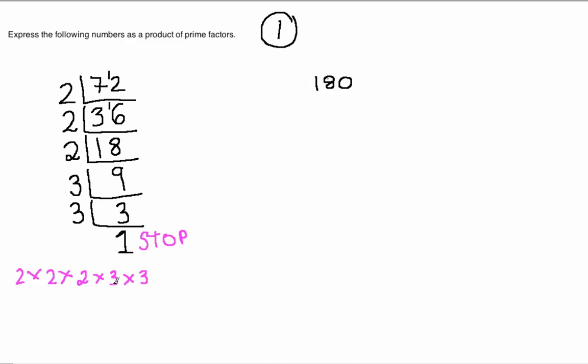You could leave your answer in this form, but generally a question will ask you to write it in index form. This means combining any of the similar bases together and writing them in a simpler form. So 2 times 2 times 2 can be written as 2 to the power of 3, multiplied by 3 times 3, which is the same as 3 squared. So this is your final answer.